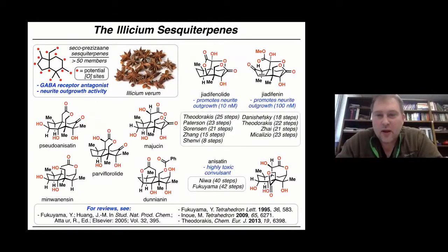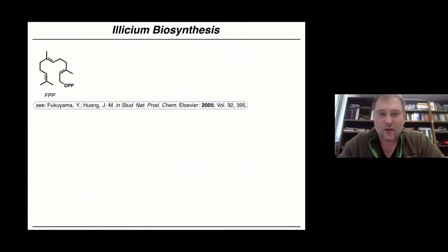They've seen a lot of synthetic attention. The syntheses to date range from quite lengthy in the case of anisatin to quite efficient in the case of geodephenolide. In fact, Ryan Shenby's group has synthesized this compound in only eight steps, which is quite remarkable and something I've kind of finally realized will most likely never catch, our shortest route to this molecule.